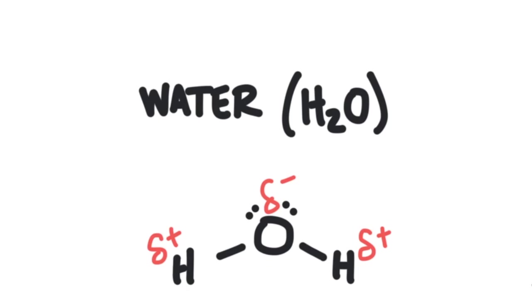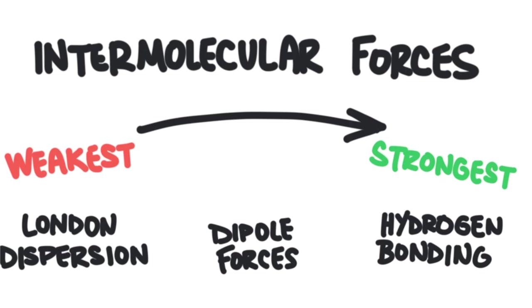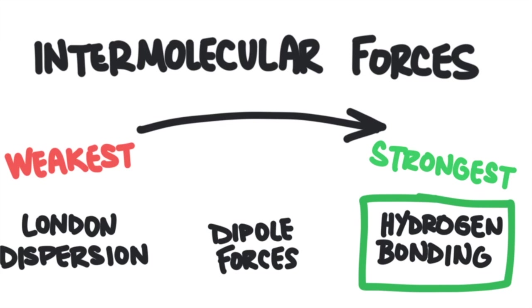Molecules are attracted to one another, and some molecules attract more strongly than others. Intermolecular forces are the forces of attraction between molecules. There are three major types: London dispersion force is the weakest, dipole forces are stronger, and hydrogen bonding is the strongest intermolecular force of attraction. Hydrogen bonds are the intermolecular forces that hold water molecules together. They are not real bonds like covalent or ionic bonds, but they are very strong forces of attraction nonetheless. Water's properties are a result of the water molecule's bent shape and its ability to hydrogen bond.